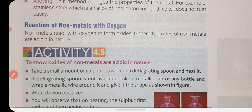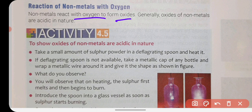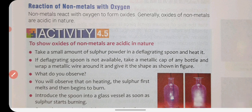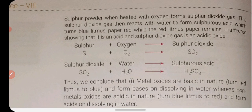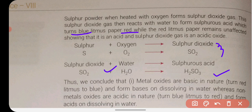Now we will look at the reaction of non-metals with oxygen. When non-metals react with oxygen, they form oxides, but these oxides are acidic in nature — non-metal oxides are acidic. For example, sulfur is a non-metal. Sulfur reacts with oxygen to form sulfur dioxide (SO₂). Sulfur dioxide gas then reacts with water to form sulfuric acid (H₂SO₄). If you test with blue litmus, it confirms that non-metal oxides are acidic in nature.